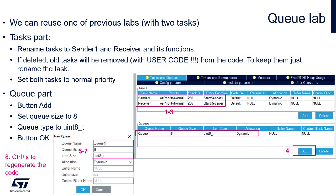We can reuse any of the previous labs where we've got two tasks. In this case we'll need two tasks, but the naming will be a bit different than before. We will need task sender1 and task receiver. Both tasks should have the same priority — let's say OS priority normal. We will have a slightly bigger stack size of 256. The entry functions would be: for sender1, startSender1 function, and for receiver, startReceiver function.